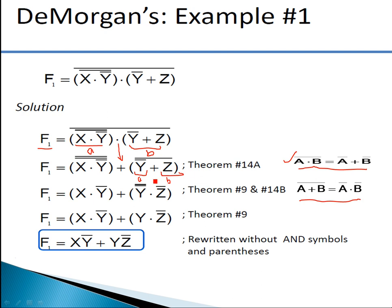De Morgan's second theorem: (a + b)̄ = ā · b̄. Here instead of 'a' we have ȳ, and instead of 'b' we have z. Applying the second De Morgan's theorem — break the line, change the sign: ȳ gets one more bar (double bar cancels to y), the plus becomes dot, and z gets a bar. So we get x · ȳ + y · z̄. Rewriting without the AND symbol: xy̅ + yz̄. This is the final simplified SOP form.